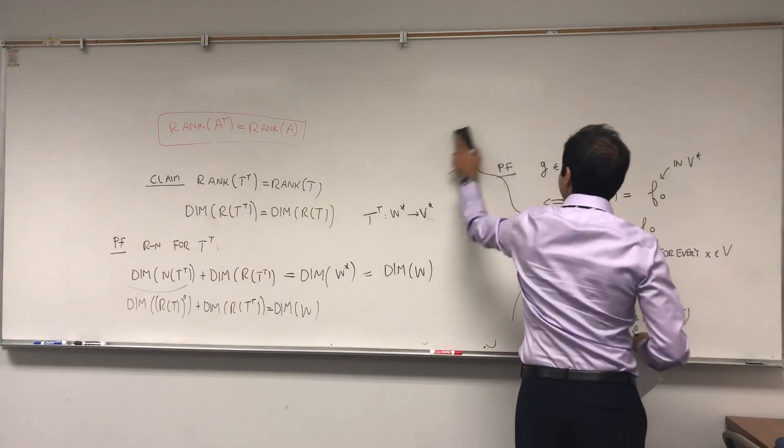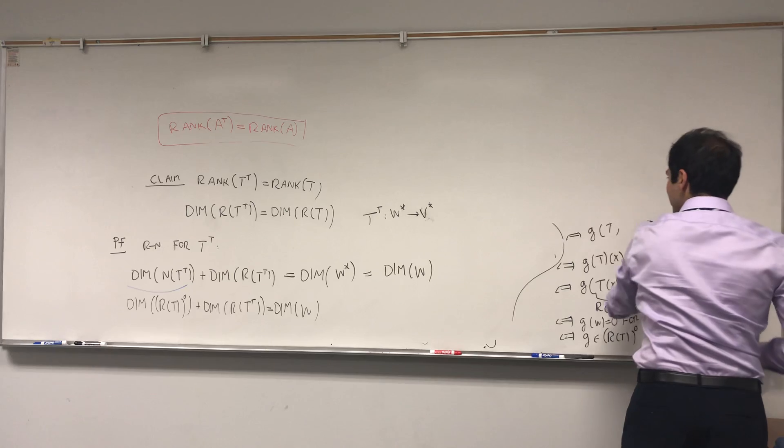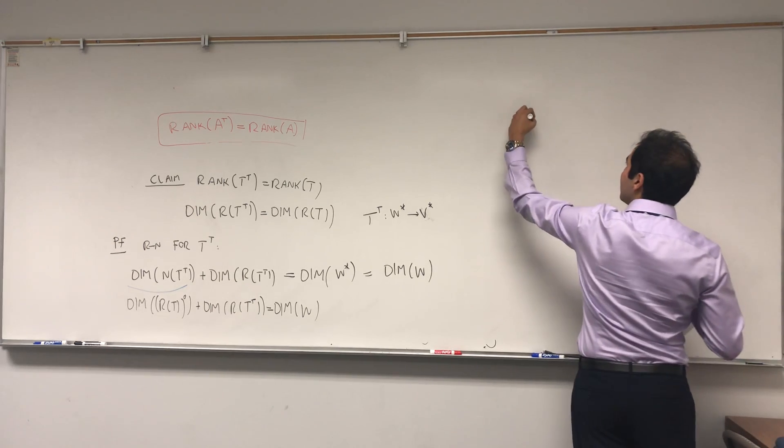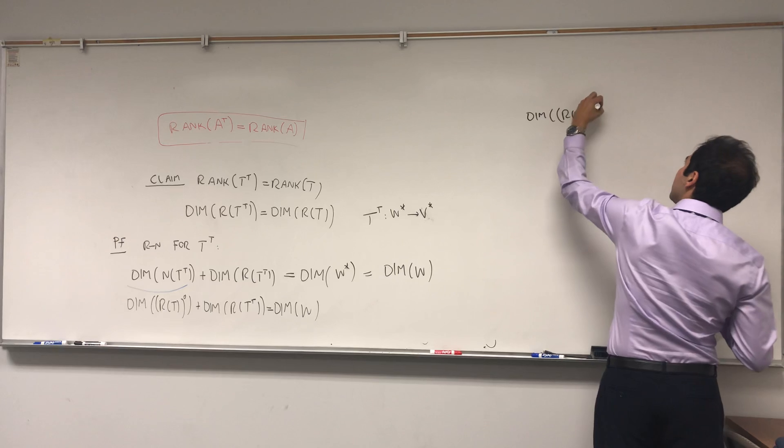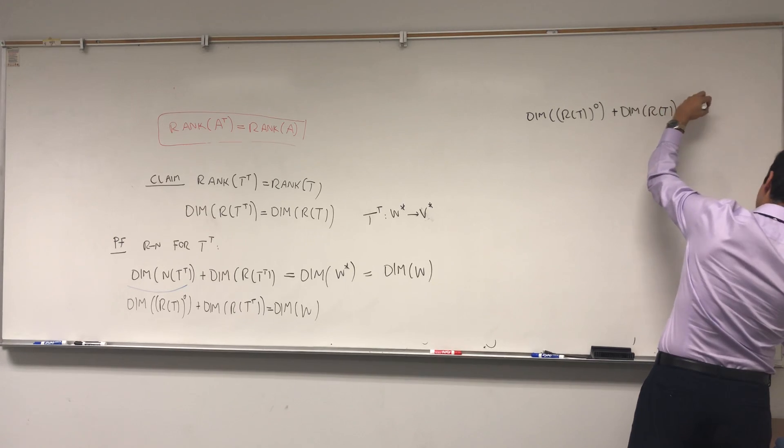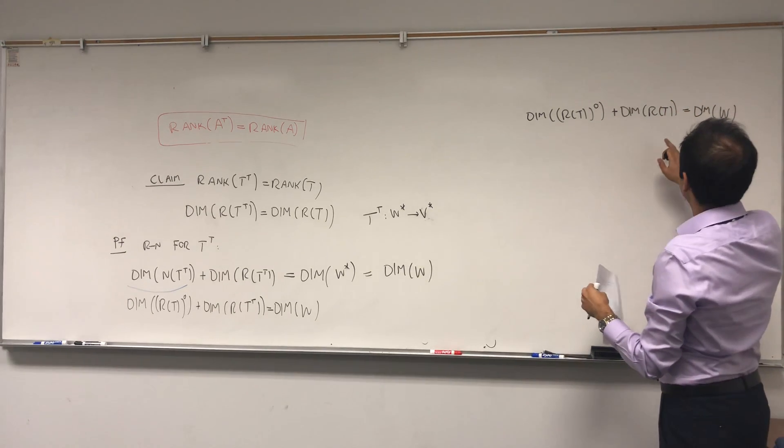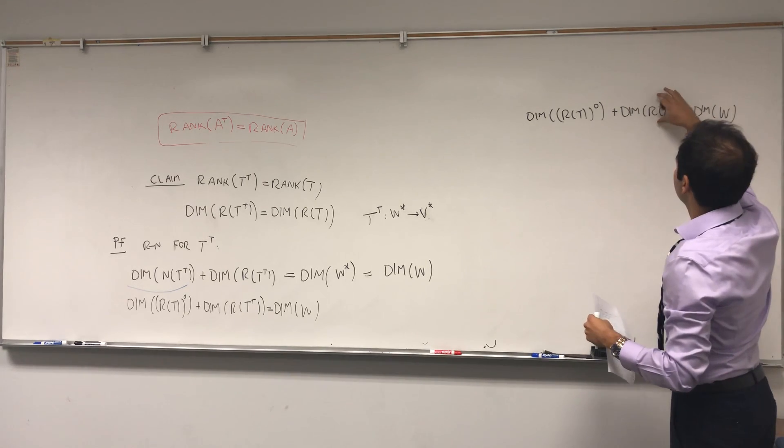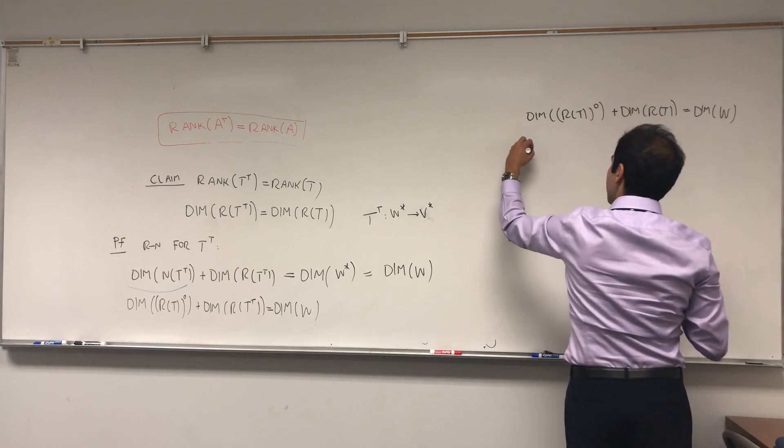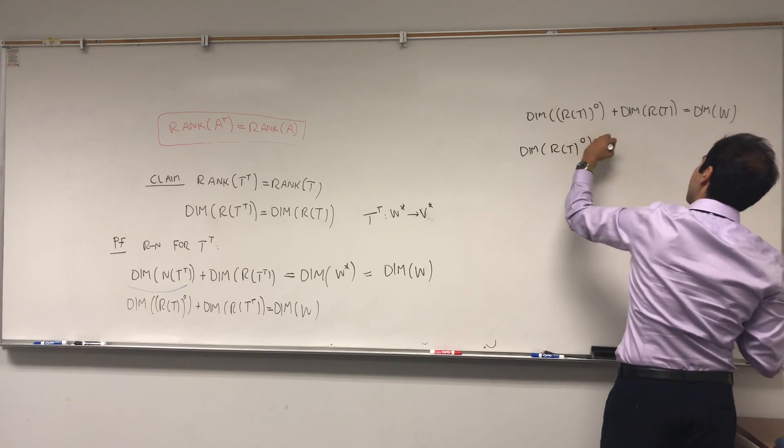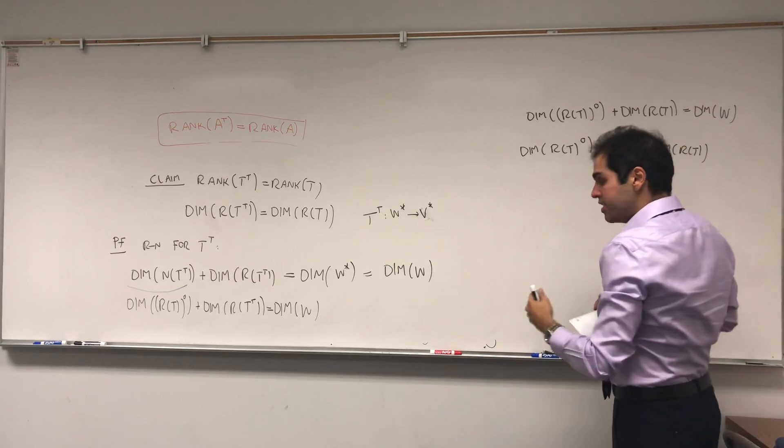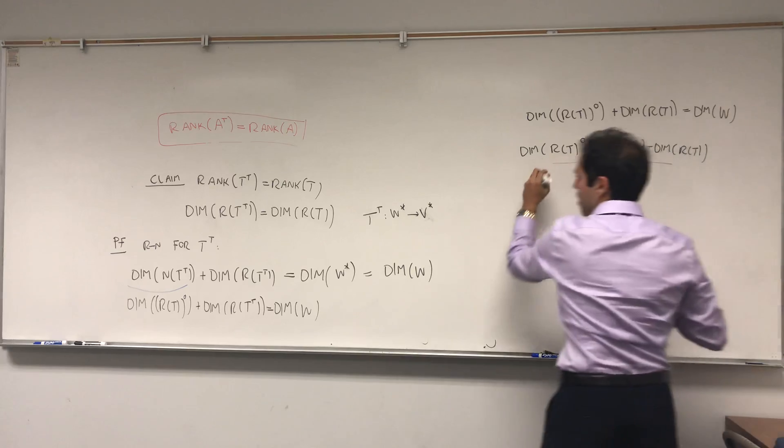And now, remember what we've shown, the nice thing is, is that the dimension of the range plus the dimension of the annihilator, they kind of cancel out. So, dimension of R of T plus the dimension of R of T naught is equal to the dimension of W. So, in particular, what we get is dimension of R of T naught equals dimension of W minus dimension of R of T.